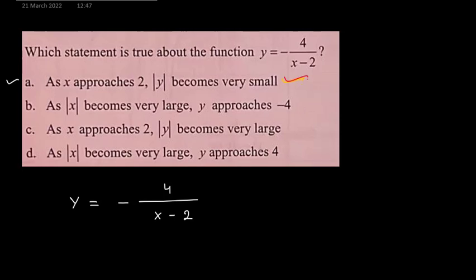As x becomes very large, denominator becomes infinity and minus 4 divided by infinity will be approximately 0. So y approaches minus 4, this is not correct.